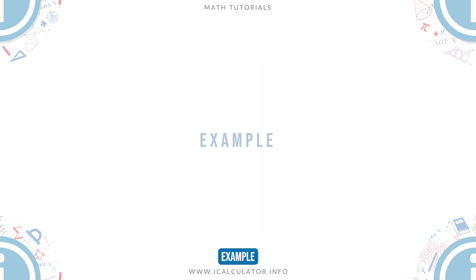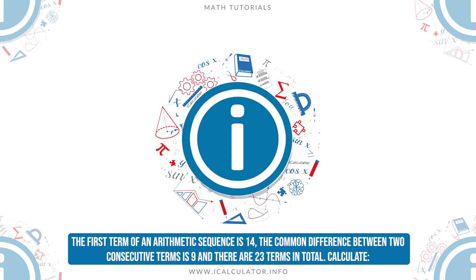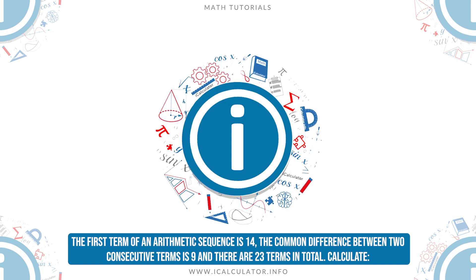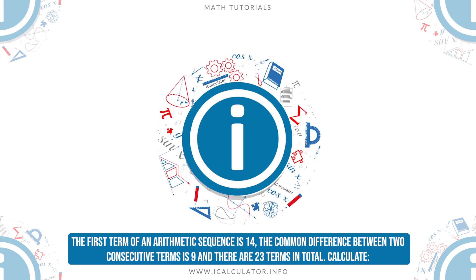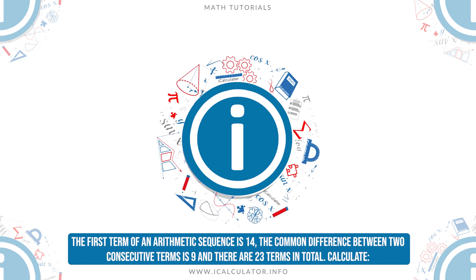Example: The first term of an arithmetic sequence is 14, the common difference between two consecutive terms is 9, and there are 23 terms in total.